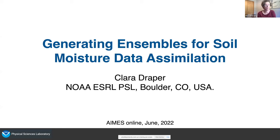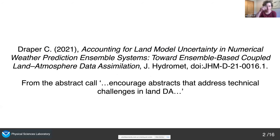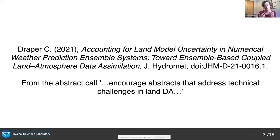I'm going to present some work I did a couple of years ago looking at different methods for generating ensembles to use in soil moisture data assimilation. This work is covered in a paper; however, the paper is a little bit more big picture. In the paper, I focus on the fact that land model dynamics are different from atmospheric model dynamics, and these differences affect the way that errors grow and propagate in both systems. So when we're doing data assimilation or designing an ensemble system, we need to think about these differences.